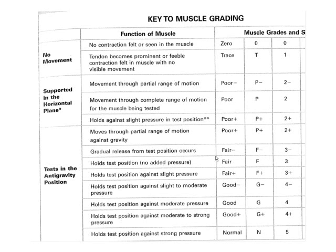Isometrically holding your forearm against gravity, place resistance on top with your other hand. Looking at the scale: if you can take slight pressure, you get a three plus; slight to moderate pressure, a four minus; moderate pressure, a four; moderate to strong pressure, a four plus; and if you can hold the test position against strong pressure, you get a five. Now this begs the question of what constitutes strong or moderate pressure — that's a tactile skill we have to develop in lab. It's important to start here and understand the procedure and the definitions of the different grades.